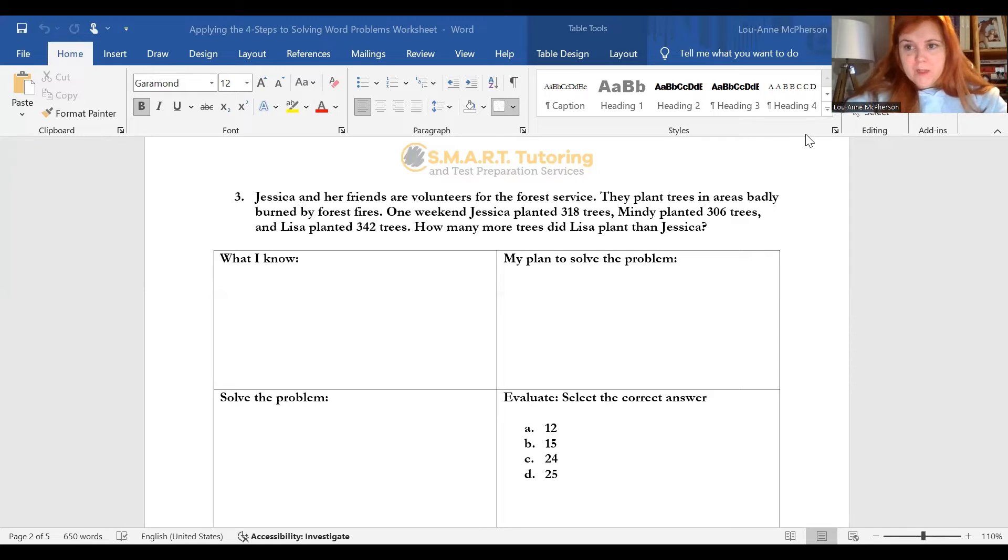One way you're going to determine the type of math is to look at your numbers. You can see here that you're working with 318, 306, and 342. Those are all whole numbers. So you're working with whole numbers. If you were working with decimals, you would see decimals. If you were working with fractions, you would see fractions. Rate and proportion, you would see a rate. So it's very clear what kind of math you're being given in a question. You just have to be able to pull it out from the information that's given to you. Start with the numbers. So in terms of what you know, we have whole numbers.